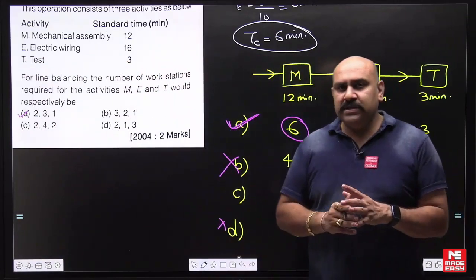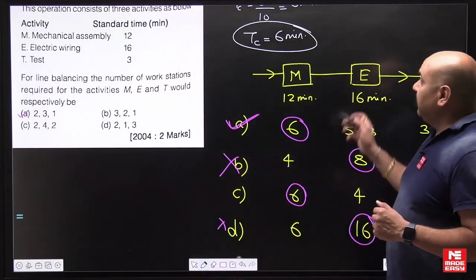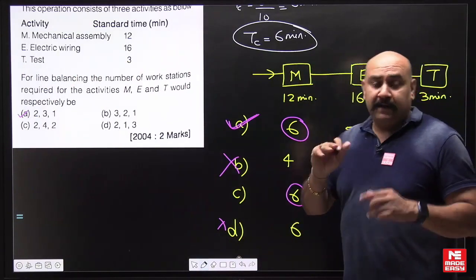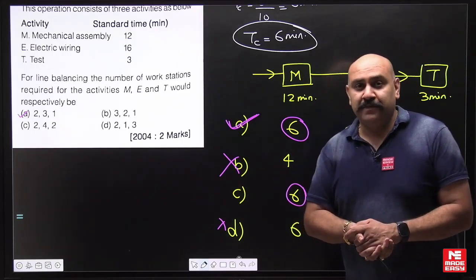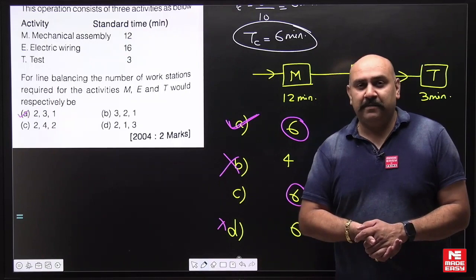So in these types of questions, directly go through the options only. And remember, they give the data so that you can find out the cycle time - that is very important. Hopefully this will be helpful to you. Do share and subscribe to the MadeEasy channel.